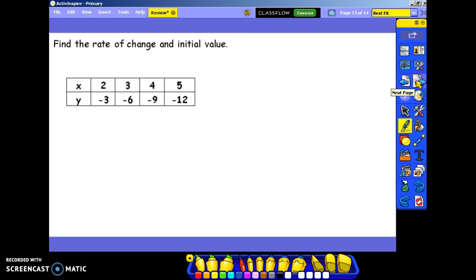Find the rate of change and initial value. This is going to give us negative 6 minus negative 3 over 3 minus 2. That gives us negative 3 over 1. And we plug a point in. Y equals mx plus b. Negative 3 times 2 is negative 6. Add 6 to both sides. And you get positive 3 as your initial value.